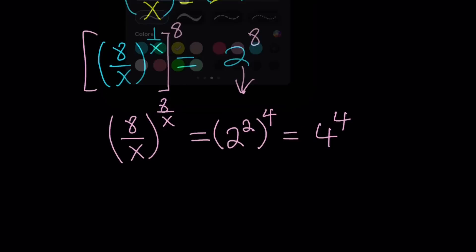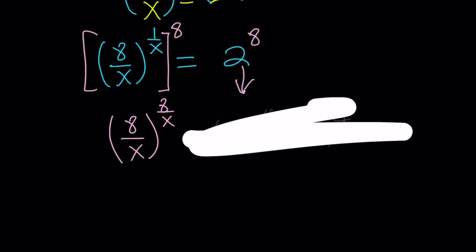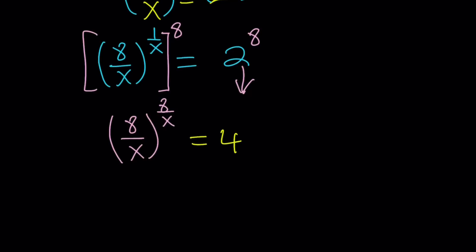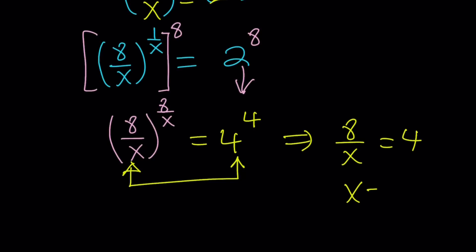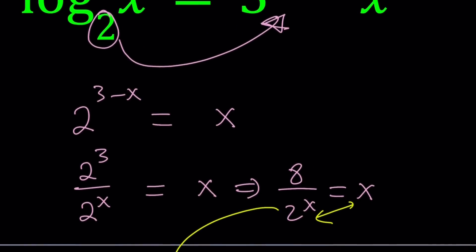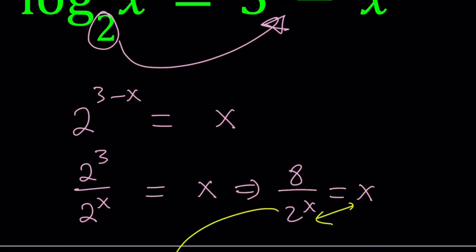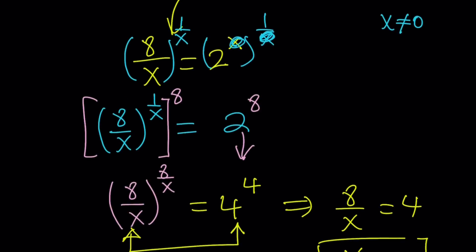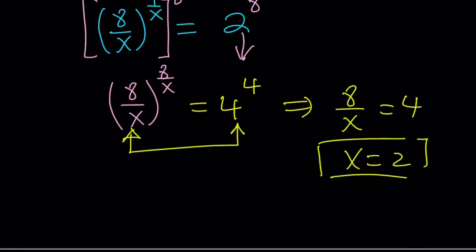Now I have 8 over x to the power 8 over x equals 4 to the power of 4. Isn't that nice? We can safely say that if 8 over x equals 4, we have a solution. So 8 over x equals 4 gives us x equals 2. I know what you're thinking — when you saw the original equation you immediately thought x should be 2 because it satisfies the equation. That's guessing; this approach is more educated guessing. So x equals 2 is a solution.